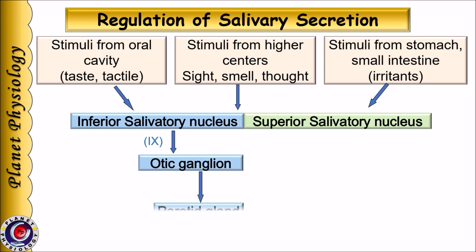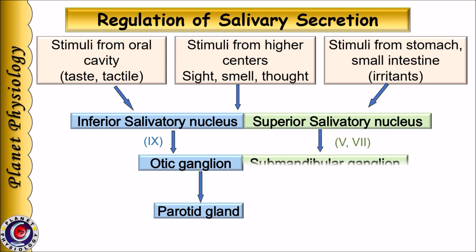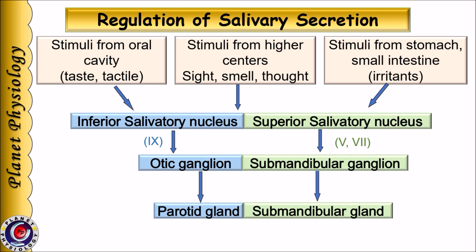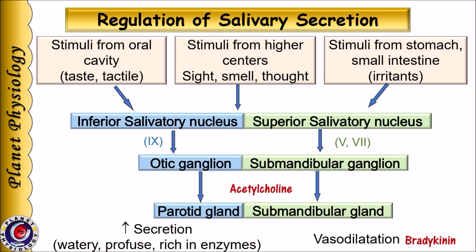From the inferior salivatory nucleus, impulses travel in the glossopharyngeal nerve to the otic ganglion and then to the parotid gland. From the superior salivatory nucleus, signals travel in the trigeminal and facial nerve to the submandibular ganglion and then to the submandibular gland.